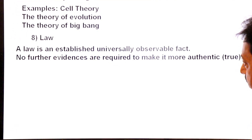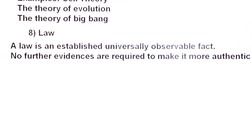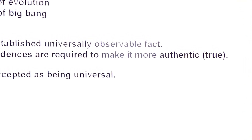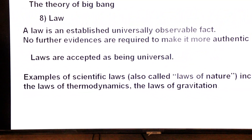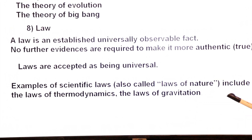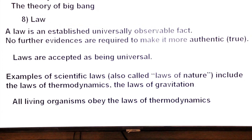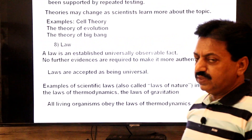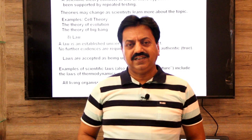A law is an established, universally observable fact. No further evidence is required to make it more authentic or true. Laws are accepted as being universal. Examples of scientific laws, also called laws of nature, include the laws of thermodynamics and the law of gravitation. All living organisms obey the laws of thermodynamics. That's all about the biological method. Dear students, wish you all the best. Thank you.